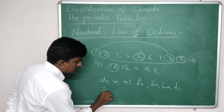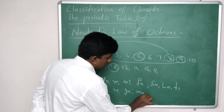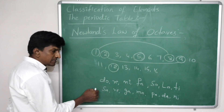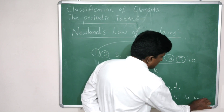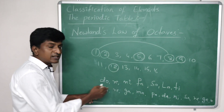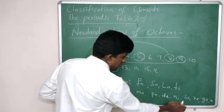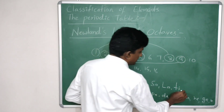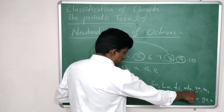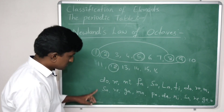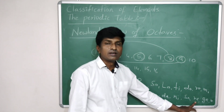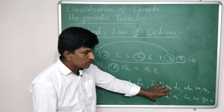This is similar to Indian musical notes Sa, Re, Ga, Ma, Pa, Da, Ni — after the 7th note, the 8th is again Sa. Similarly in Western music Do, Re, Mi, Fa, So, La, Ti — the 8th repeats as Do. Just as musical tones repeat every 8th note, in Newlands' arrangement the properties of elements also repeat every 8th element — the 1st and 8th have the same properties, the 2nd and 9th have the same properties.